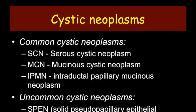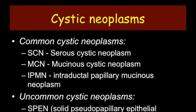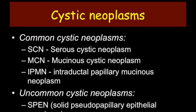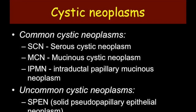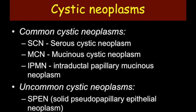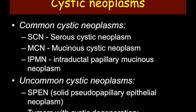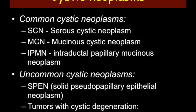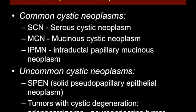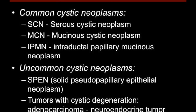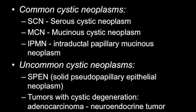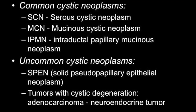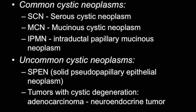Cystic neoplasms — the most common ones are serous cystic neoplasms, the mucinous variety, and intraductal papillary mucinous neoplasms (IPMN), while solid pseudopapillary epithelial neoplasms are uncommon. Sometimes any pancreatic tumor can undergo cystic degeneration.